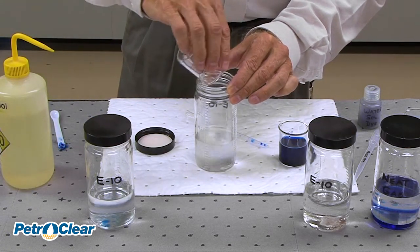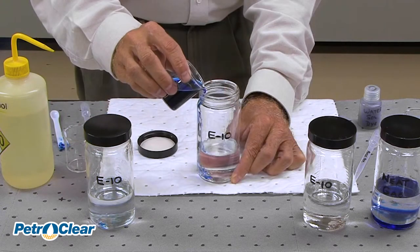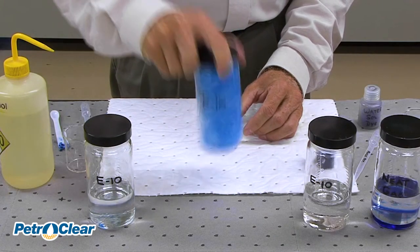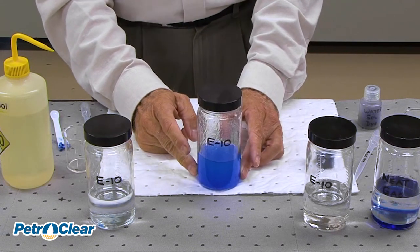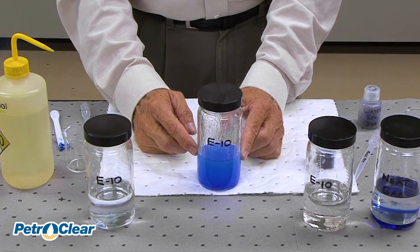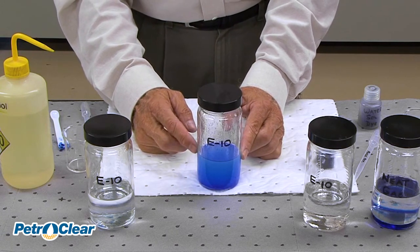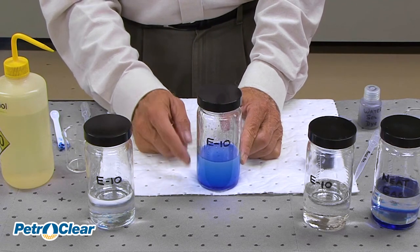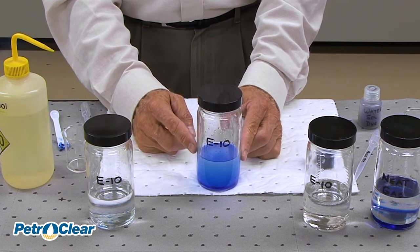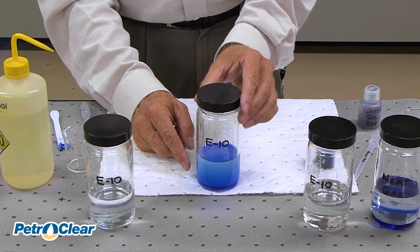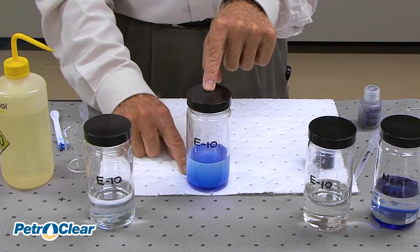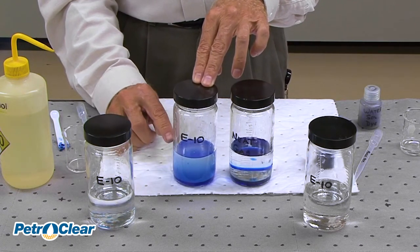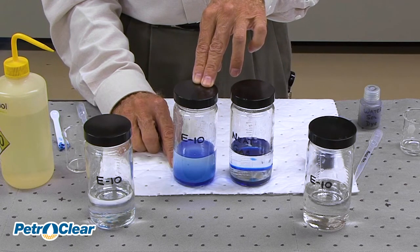We'll make another container of E10 to show phase separation by pouring in enough dye colored water to exceed the 0.5% water holding limit. Agitate it and the E10 will go into phase separation. The alcohol likes the water better than the gasoline. You can now see that the colored water slowly goes to the bottom. The alcohol molecule is bonding with the water molecule and breaking the bond with the gasoline molecule. Now in the container you have a water alcohol solution at the bottom, and the remaining gasoline — which no longer has the same octane rating — is on the top. That is phase separation. Notice the phase separation layer is lighter in color than the water layer of the neat gas, because this is not just water but alcohol with water.